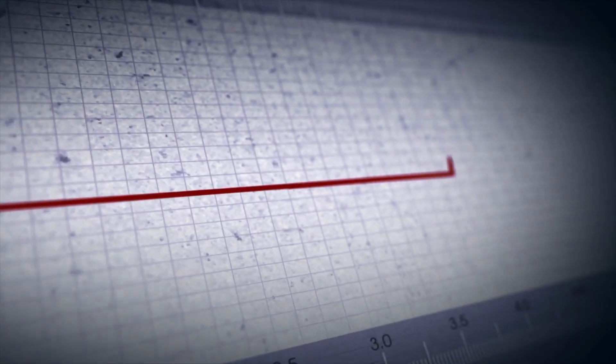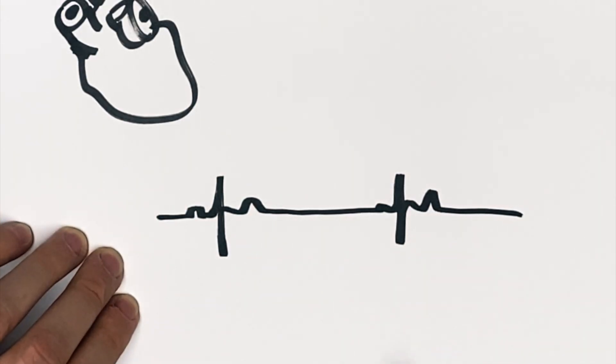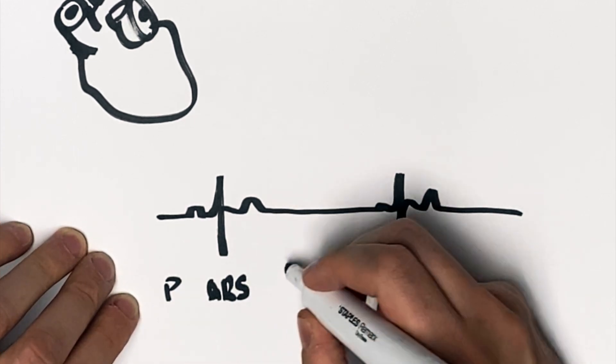When you're looking at the cardiac cycle, you have to determine exactly what's going on. The way you do this is you first look at your EKG tracing. This is your EKG tracing: your P wave, QRS complex, and your T wave.